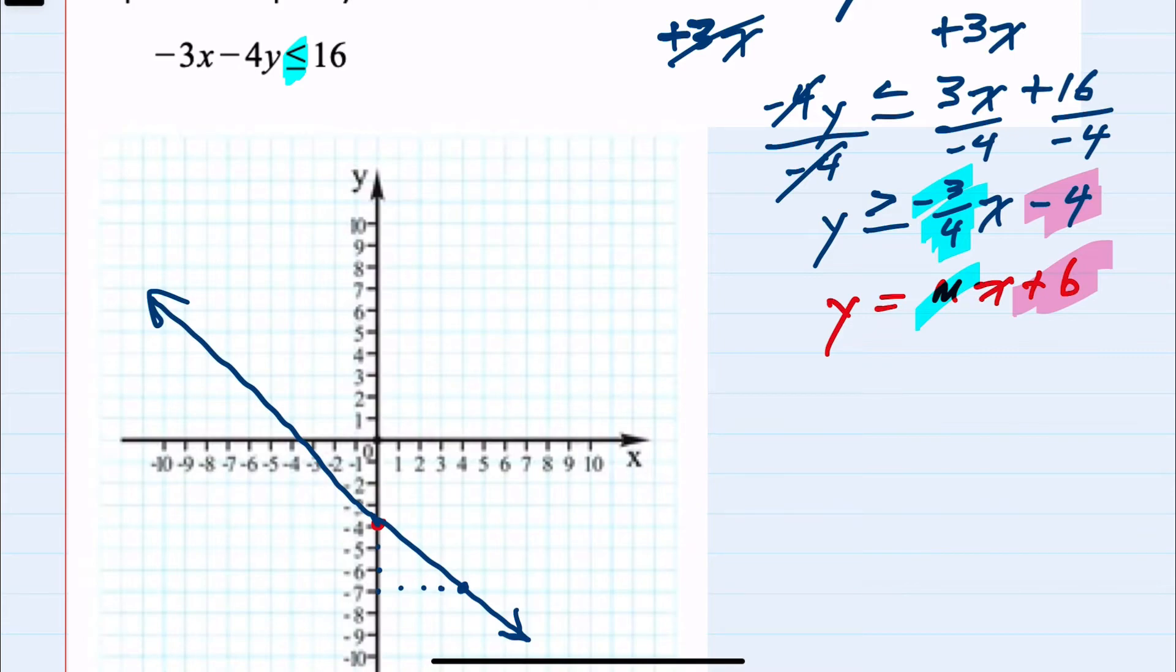We've graphed the line, but since it's an inequality, I need to determine which side to shade. To do so, I'll use a test point—any point not on the line. An easy one is the origin (0, 0).